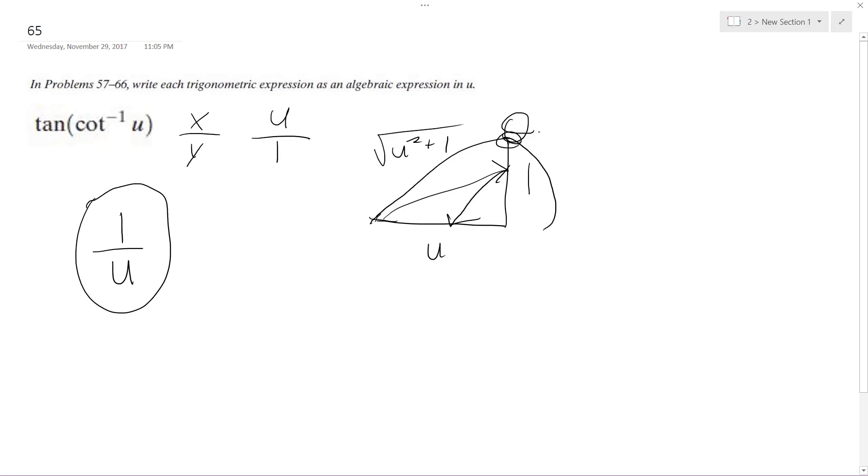So you get this triangle angle, but then we take the tangent of this, we set up the generic form. It's opposite over adjacent, which is 1 over u, and that's how we get our final solution.